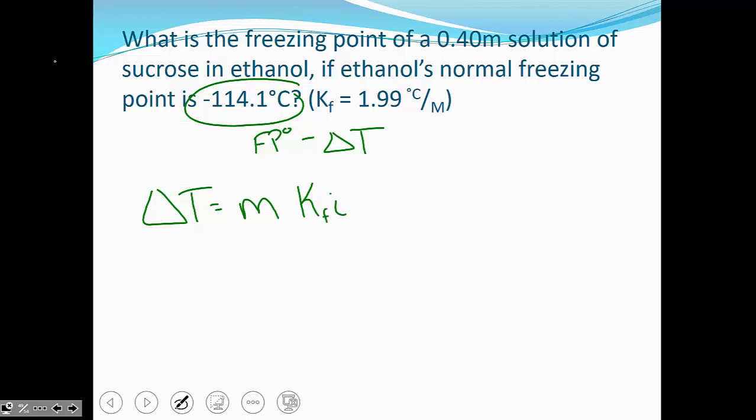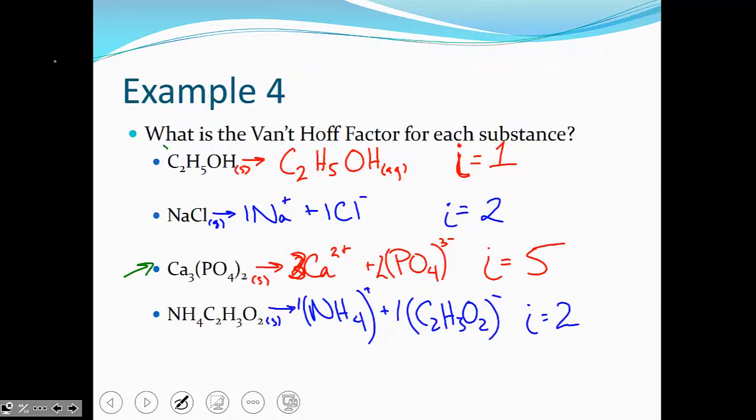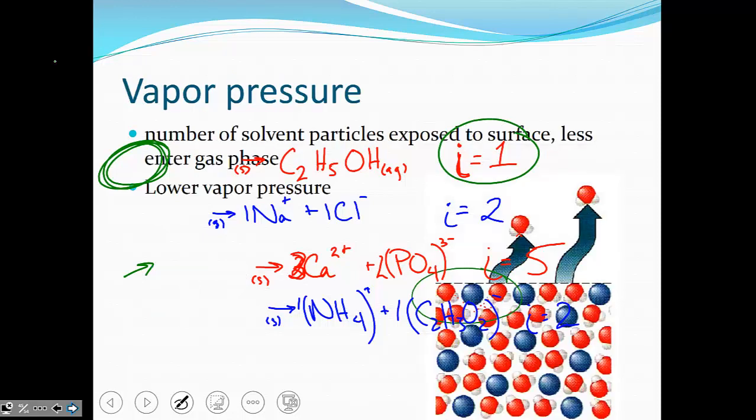Since we're talking about freezing point, we'll use KF. M is our molality, so 0.4 molal, K is 1.99 degrees Celsius for each molal, and our I is the Van't Hoff factor for ethanol. Ethanol is a non-electrolyte. It does not dissociate. So its Van't Hoff factor is 1.